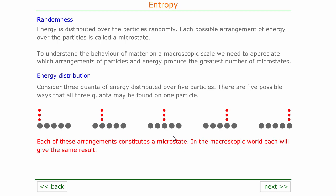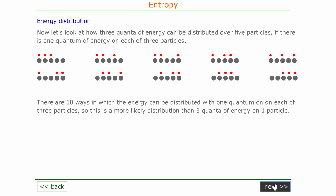These microstates would produce the same result in the macroscopic world. If we look at how we could arrange the particles when there is one quantum of energy on each of three different particles, you'll see that there are now ten possible ways of doing this, and each of those will produce an identical macrostate. So it's clear that this is a more likely outcome — there are ten possibilities for this outcome, whereas before there were only five. So this arrangement is more likely than the previous microstates.